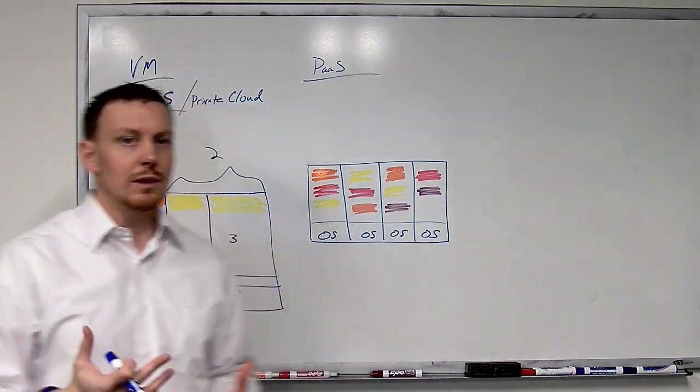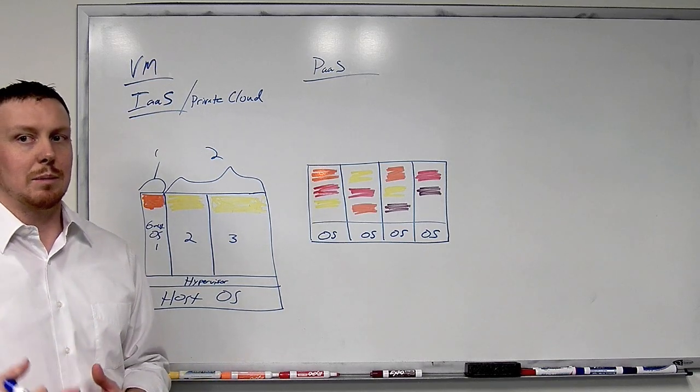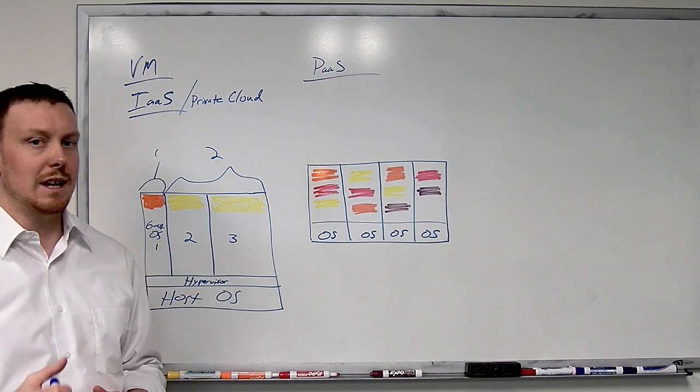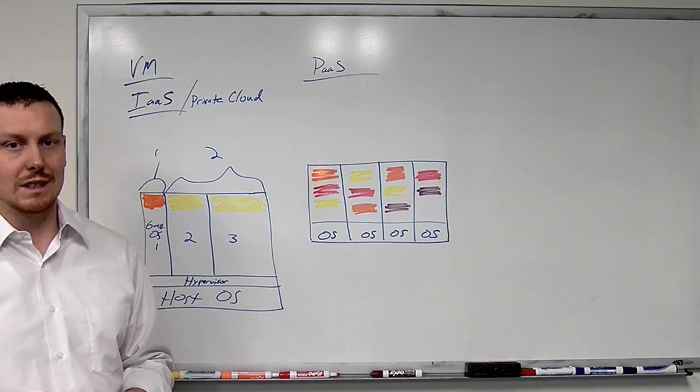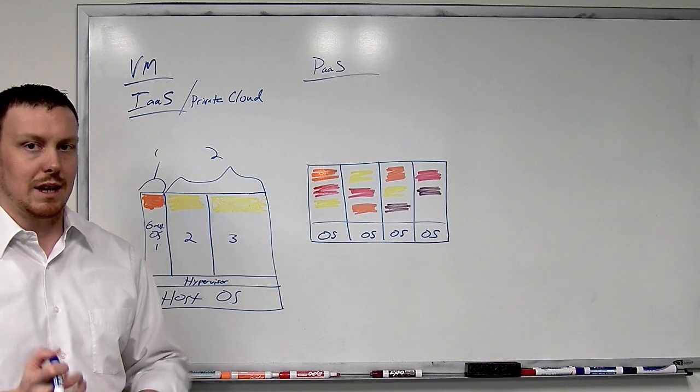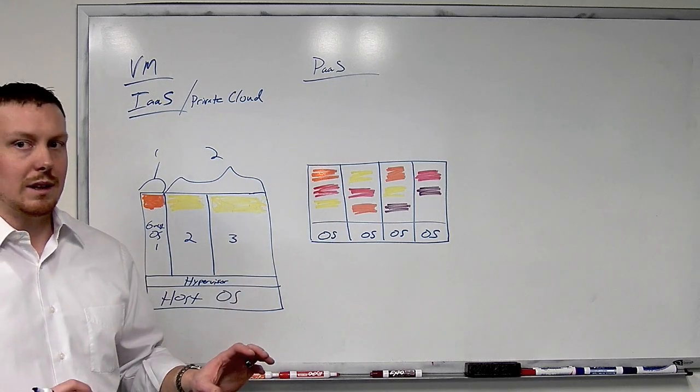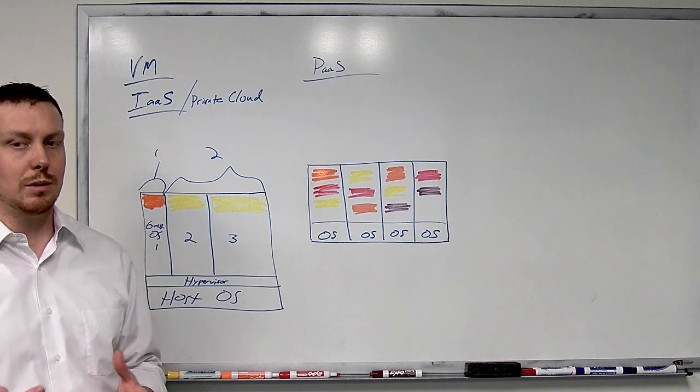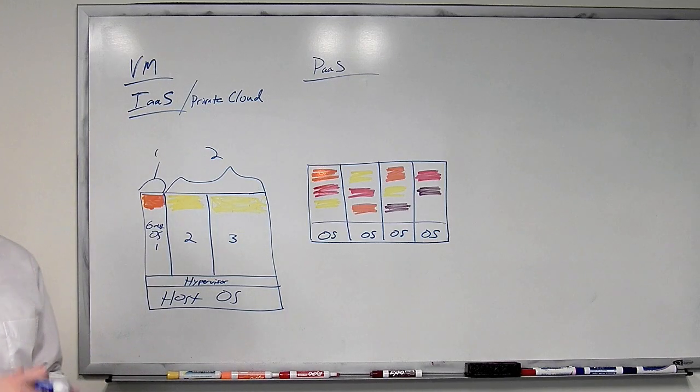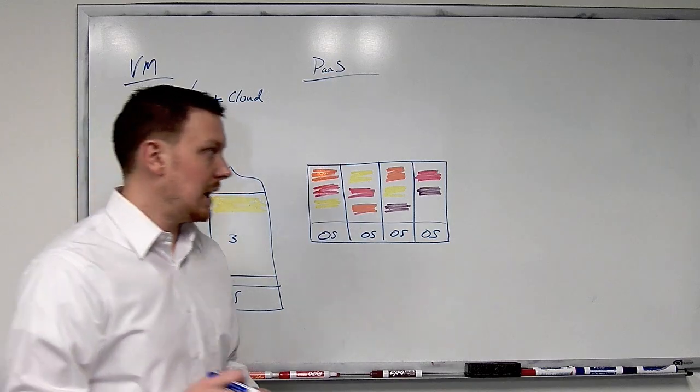The third layer of tenancy, and this is the final layer we'll talk about today, is within the application itself. And this is the tenancy model that is really popularized by software-as-a-service leaders like Salesforce.com, NetSuite, folks like that. And it's really the ability to run a single instance of an application that serves the needs of multiple distinct end-user groups, each one of them being isolated from the other in terms of performance and their data needs.